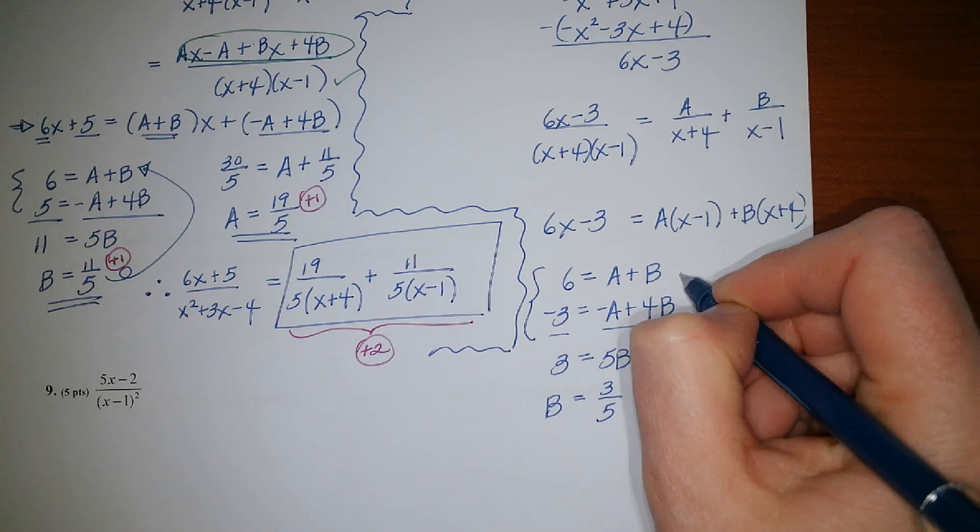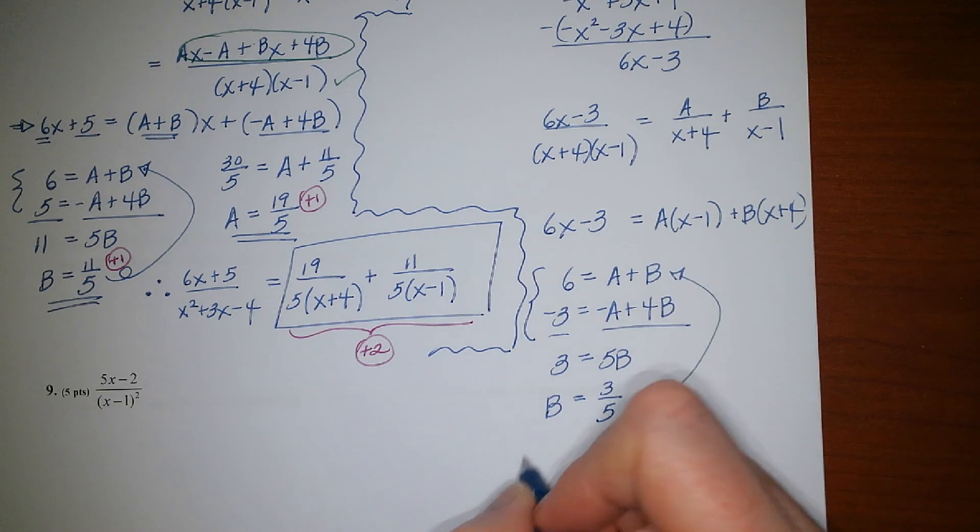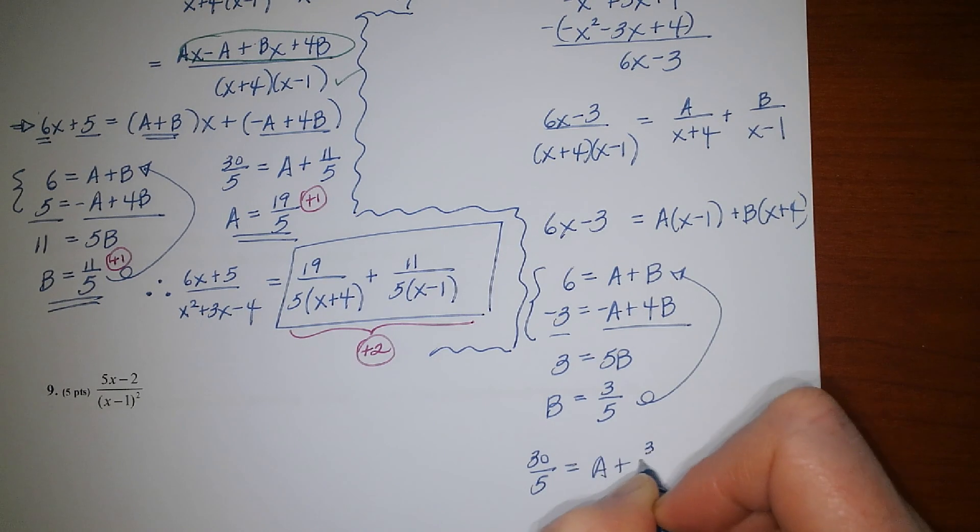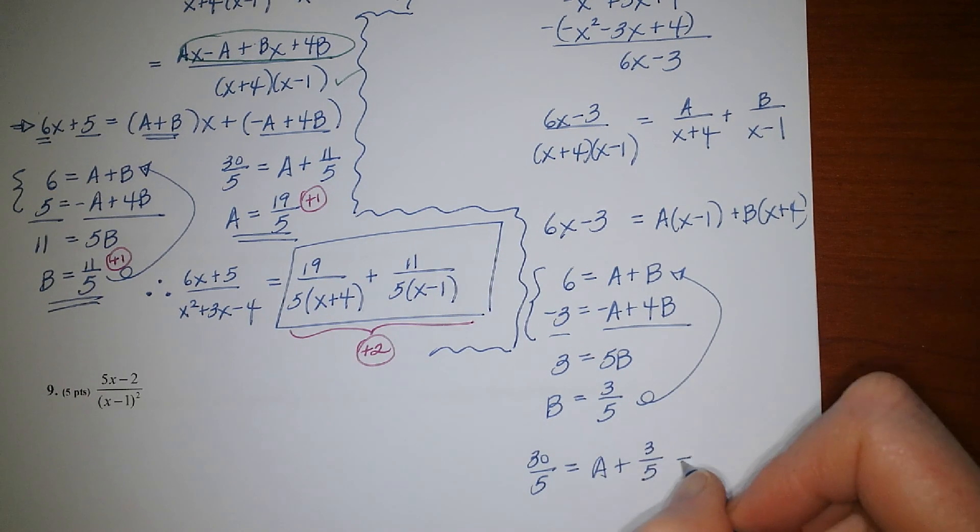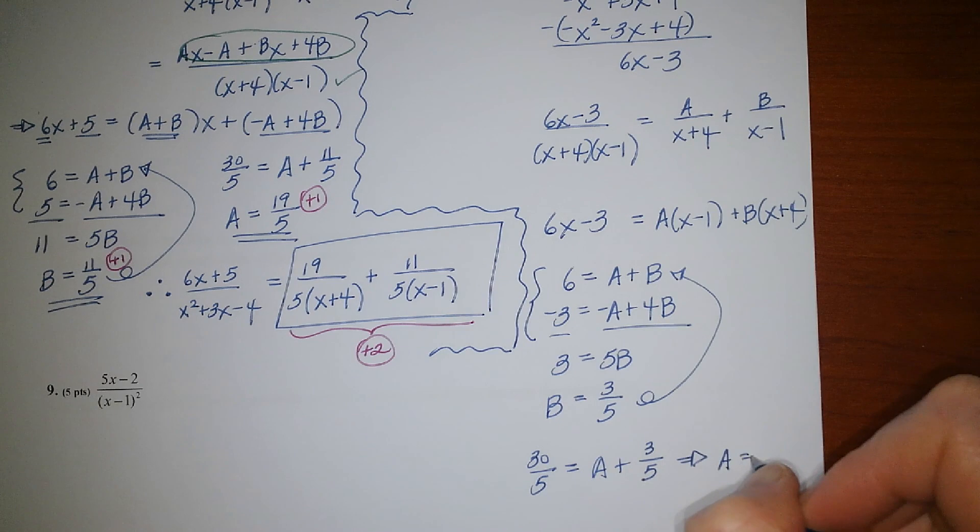And let's back substitute right there. 6 would be 30 over 5, plus a plus 3 fifths, which means a would equal 27 over 5.